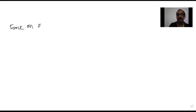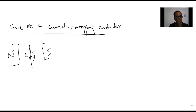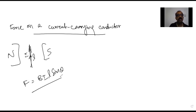Next is the force on a current-carrying conductor. If a conductor of length L carrying current I is placed in a magnetic field B at angle θ, the force is given by F = BIL sinθ. The direction of this force is determined by Fleming's left-hand rule.